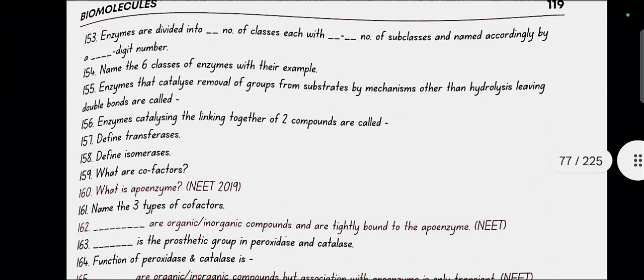Name the 6 classes of enzyme with their examples. First is oxidoreductases or dehydrogenases, example lactate dehydrogenase. Second is transferases, example transaminase or kinase. Third is hydrolases, example amylase and lipase. Fourth is lyases, example aldolase and carbonic anhydrase. Fifth is isomerases, example phosphoglucose isomerase. Sixth is ligases, example RuBP carboxylase and PEP carboxylase.